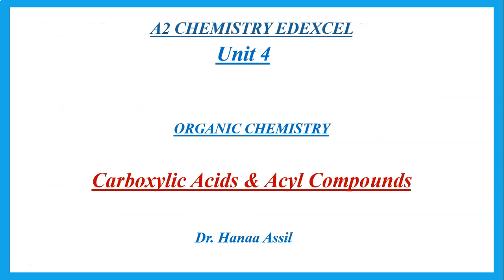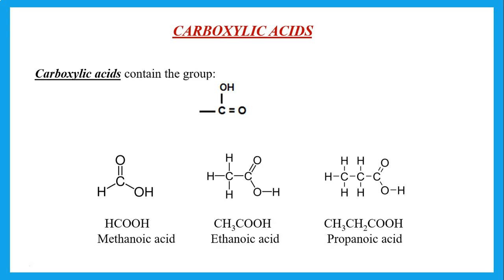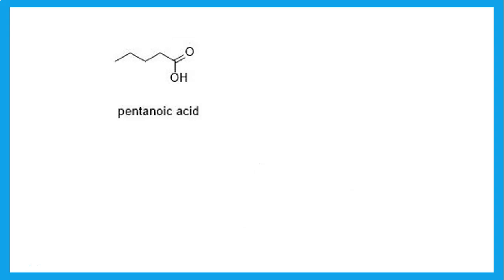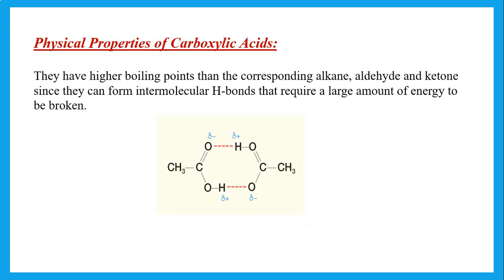Carboxylic acids have the group C=O and OH together. Examples: methanoic acid, ethanoic acid, propanoic acid. You should know how to write skeletal formulas — for example pentanoic acid, 2-methylbutanoic acid, 3-methylbutanoic acid, and propanoic acid. These are examples of the skeletal formulas of carboxylic acids.